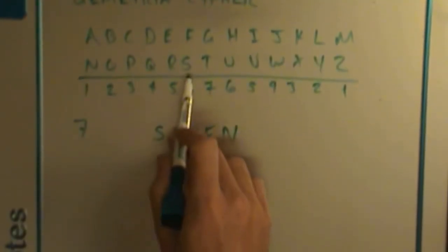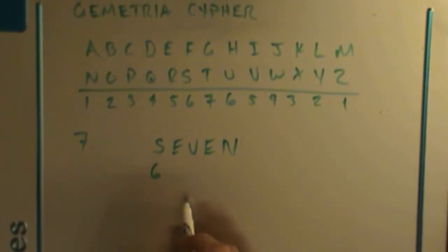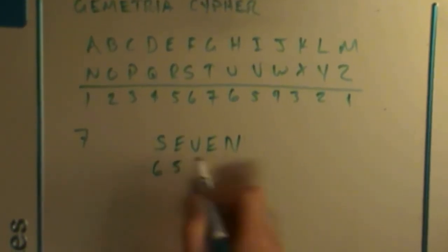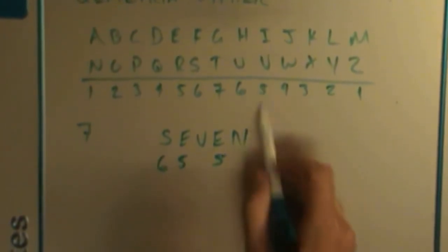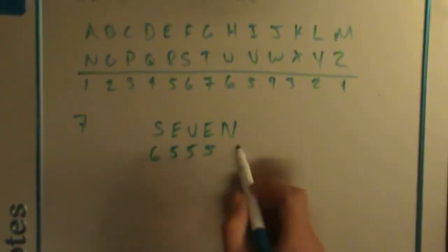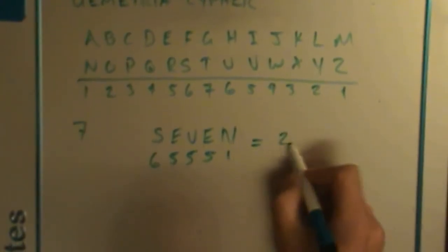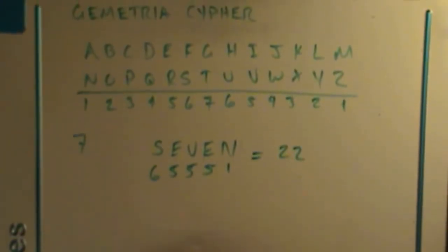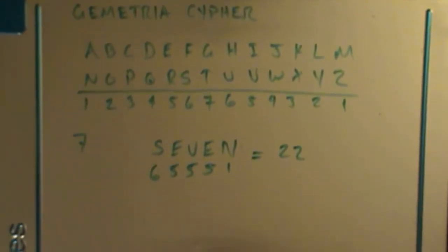So back to seven. You just look here, correspondingly, below S would be six. So that would be its numerical value. E would be five, and we'll put five here as well. V would be five as well. And N is one. If you just add all these numbers up, you'll get twenty-two. Again, back to that Hebrew alphabet, that Torah number. Twenty-two is also a very significant number.